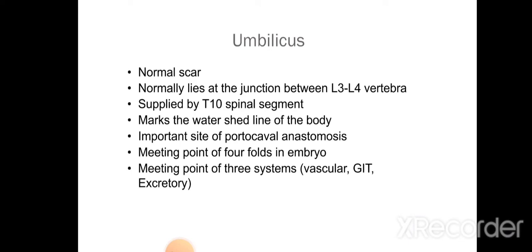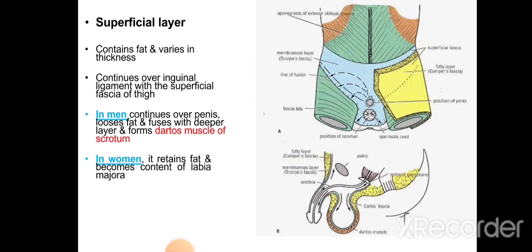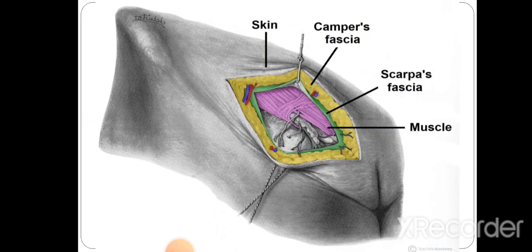Beneath the skin is the superficial fascia, made up of two layers: the outer fatty layer and the inner membranous layer. The superficial fascia contains fat of varying thickness. Below the inguinal ligament it continues as the fatty layer of the thigh. In men this fascia forms the dartos muscle of the scrotum, and in women it forms the major part of the labia majora. The fatty layer is also known as Camper's fascia.